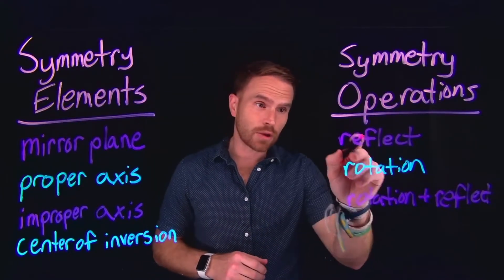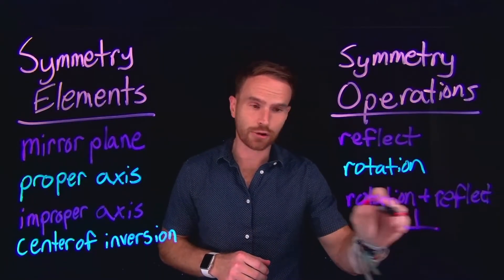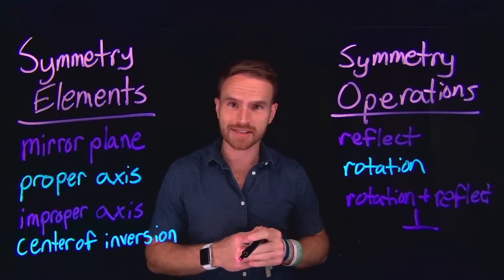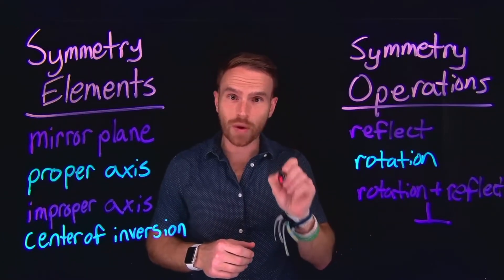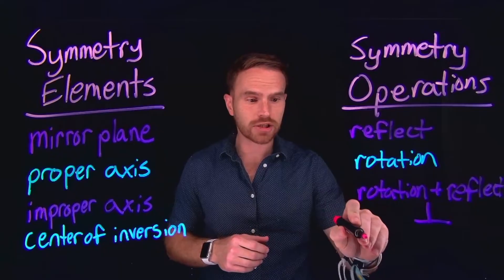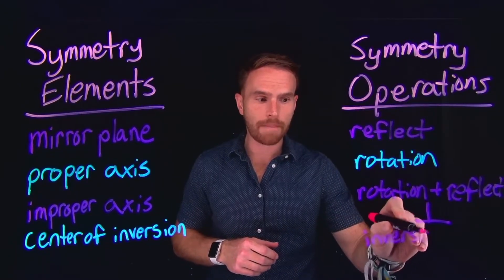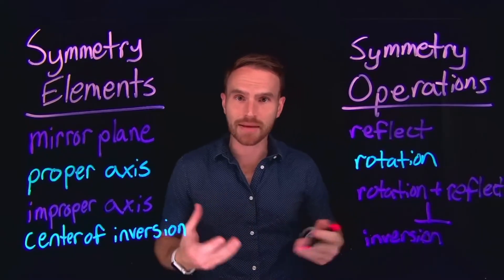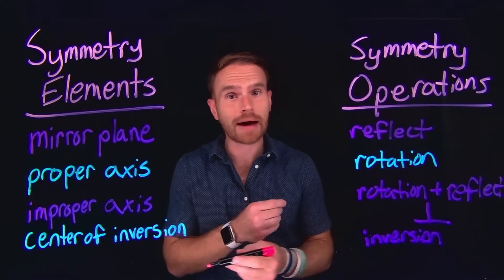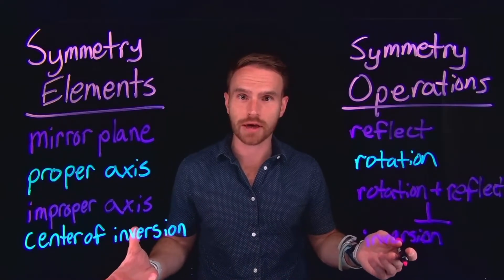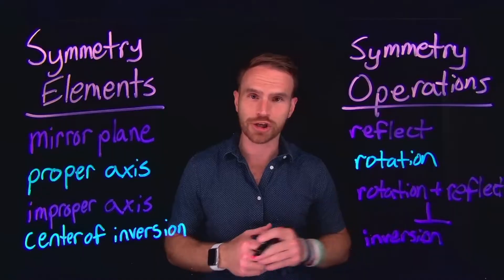Importantly, the reflection for an improper axis has to be perpendicular to that principal rotation axis. Finally, a center of inversion is a point at the direct center of a molecule where every single atom passes through that center of inversion and comes out at the exact same opposite angle on the other side. We would call that an inversion operation.